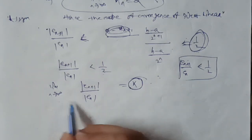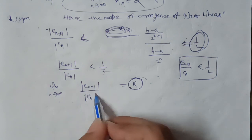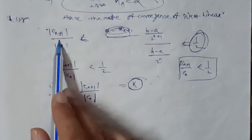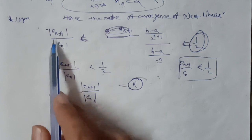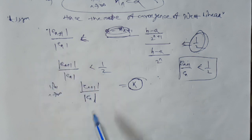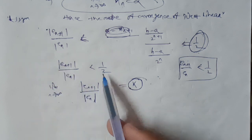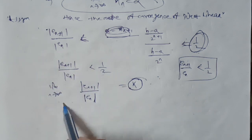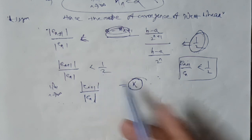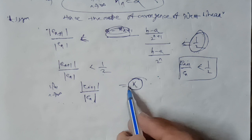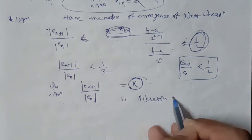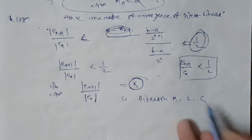This is a constant. We put the limit of eₙ₊₁ / eₙ, using the nth term errors. Dividing and taking the limit as n tends to infinity, the limit equals the constant 1/2. Therefore, the bisection method is linearly convergent.